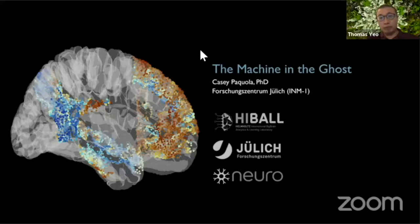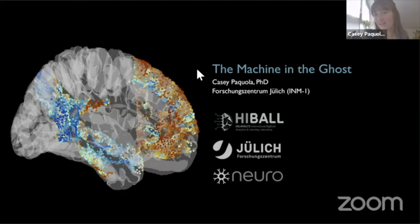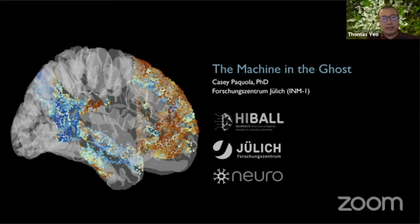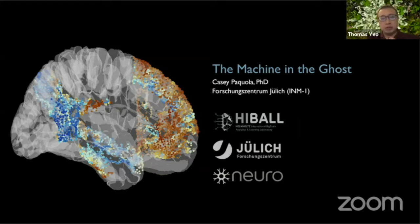For the next speaker, we have Casey — one of the organizers of this workshop, currently at Jülich, Germany. She doesn't need further introduction. She's going to talk about the machine and the ghost: site architecture and wiring of the default mode network. Go for it, Casey.